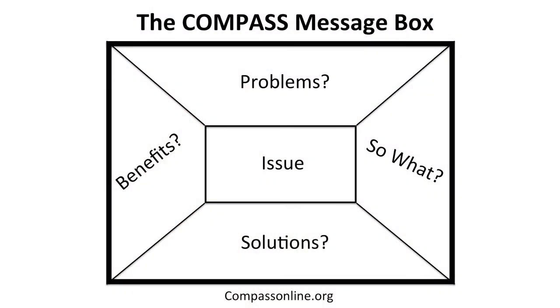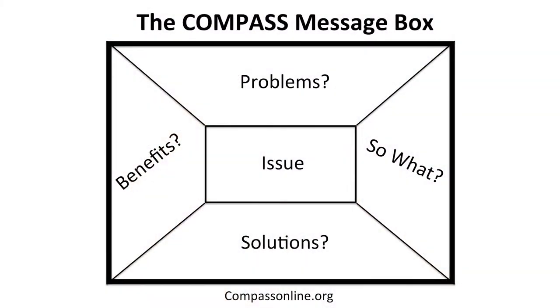I'm going to offer you an example of a way to practice your framing — a message box. There are a lot of different groups that develop message boxes. Compass is an organization that has been working on science communication for a long time and they have really honed this idea — you can find this on compassonline.org. The approach is: first you start in the center of the box with your issue — the simplest way to describe whatever it is you're trying to get across, for instance, concern about invasive species in a local lake.